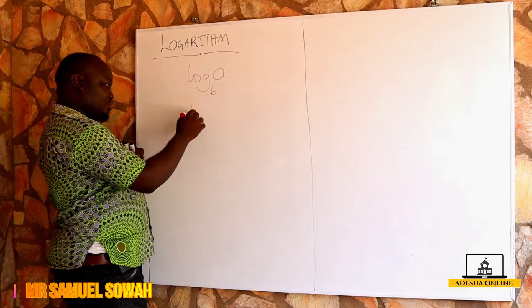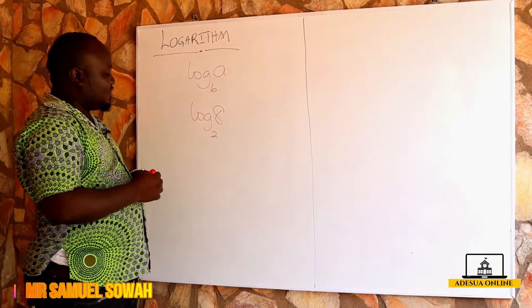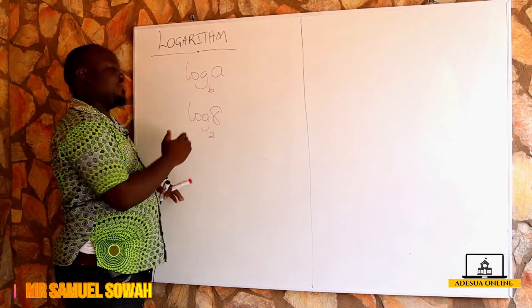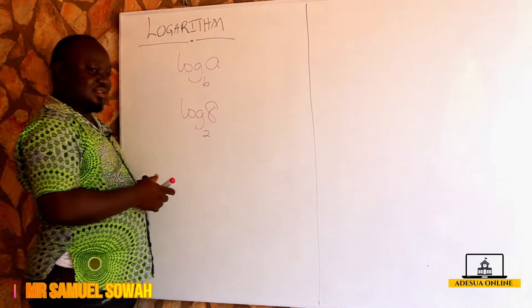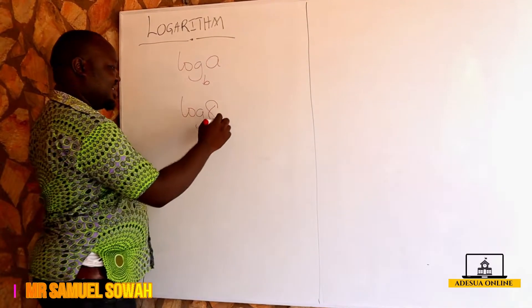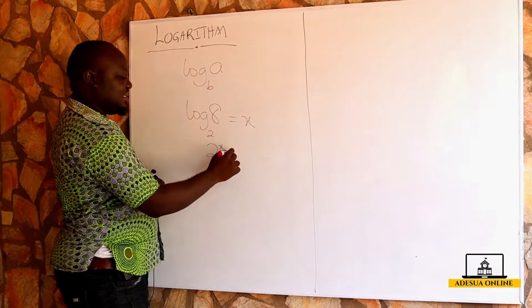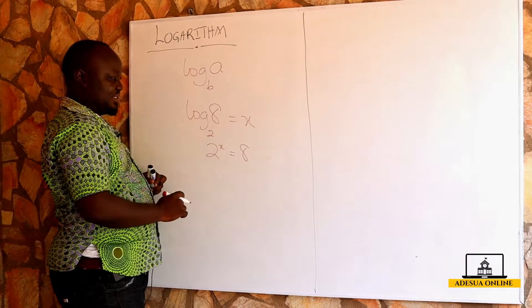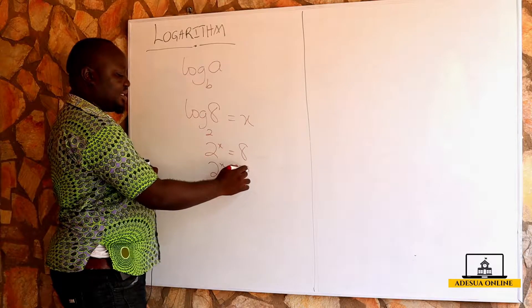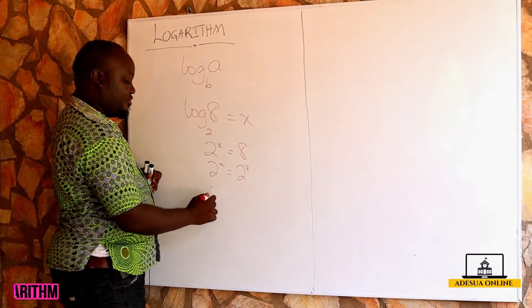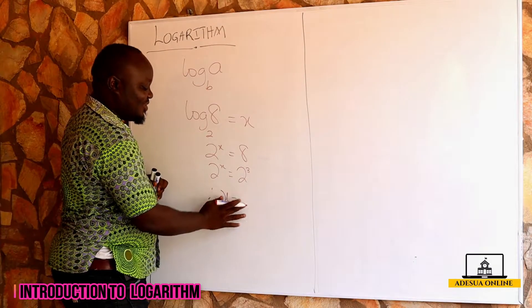If I have log 8 to the base 2, I ask: 2 raised to the power of what will give me 8? Or, what power do I raise 2 to get 8? If I set this equal to x, then 2 raised to the power x equals 8. So 2^x = 2^3; the bases are the same, therefore x is equal to 3.